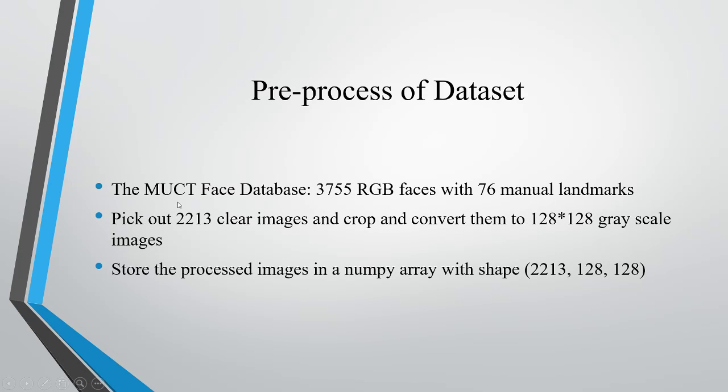The database we use to train our CNN model is a mocked face database, which consists of 3,755 faces with 76 manually labeled landmarks. Then we pick out the clear images and convert them to grayscale images.